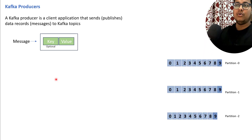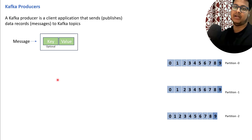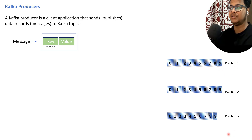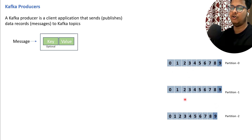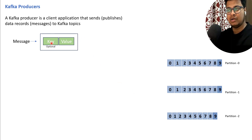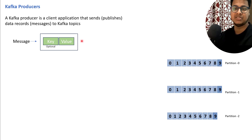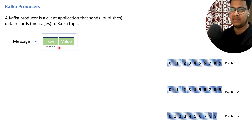Let's see how Kafka stores a particular message to different partitions. Suppose I have a Kafka topic with three partitions, and I've just mentioned the index here — zero to nine — similarly for all three partitions. A Kafka message can also have a few more fields like a message timestamp and metadata, but those are not required for this illustration.